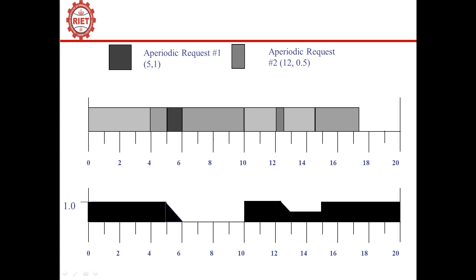We preempt task B because the deferrable server — acting as a periodic task — holds the highest priority compared to task B. The aperiodic request executes from 5 to 6, which exhausts the server's capacity of 1. From 6 to 10, the server capacity is 0. At time instant 6, we resume task B, as it is the only job in the queue, and it executes until time 10.